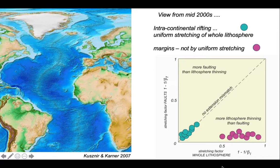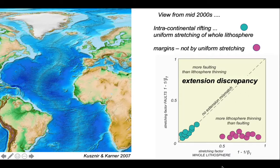Here are the margins. We can see that for margins as a whole, there's significantly more lithospheric thinning than can be accounted for by faulting in the upper crust. It implies that continental margins do not develop by uniform stretching but by some other mechanism. It's a clear display of the extension discrepancy.